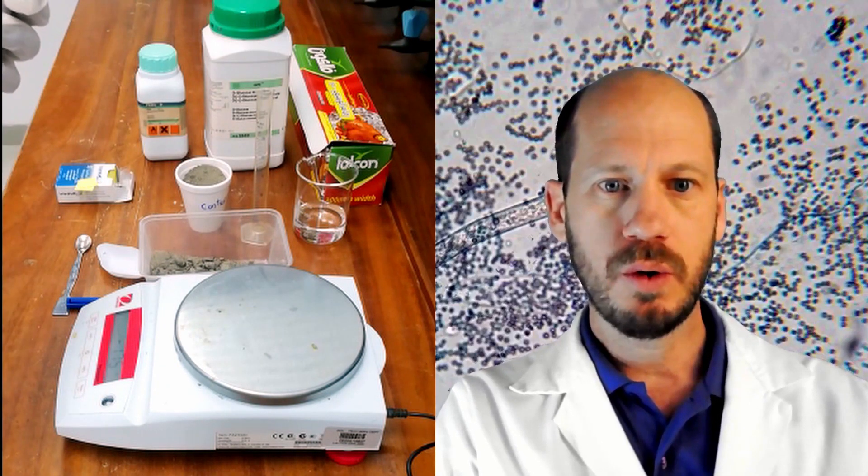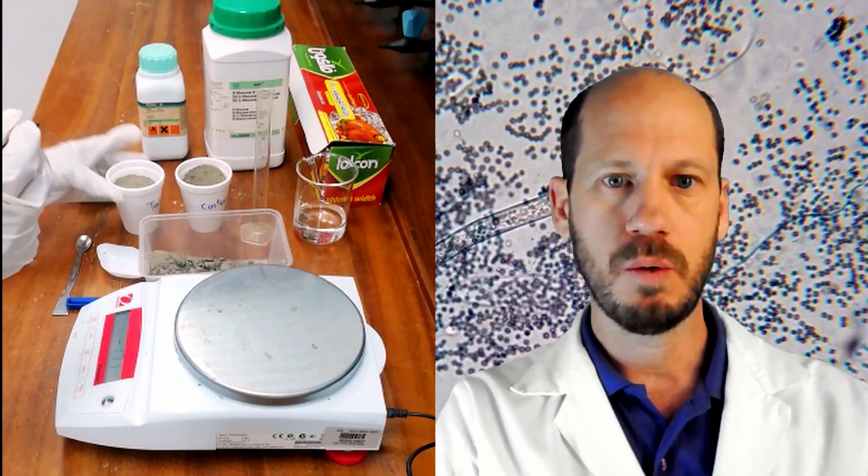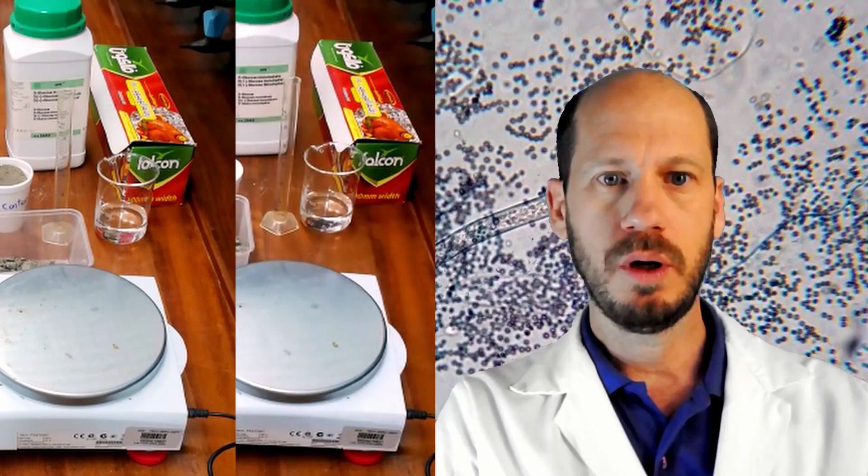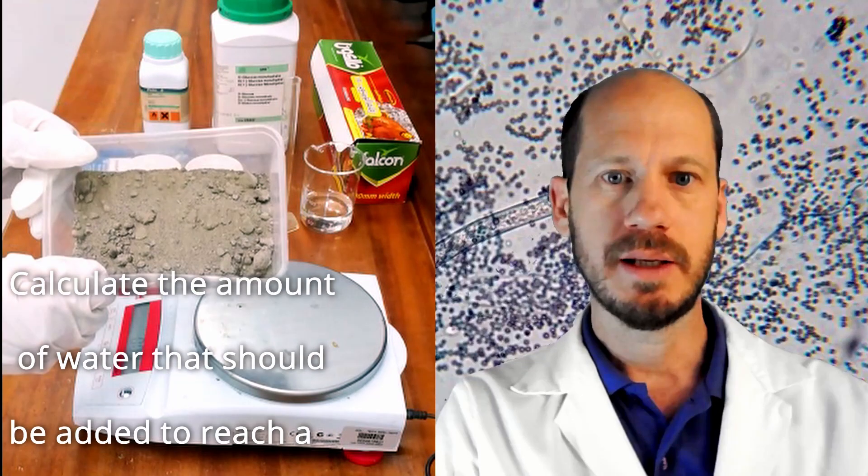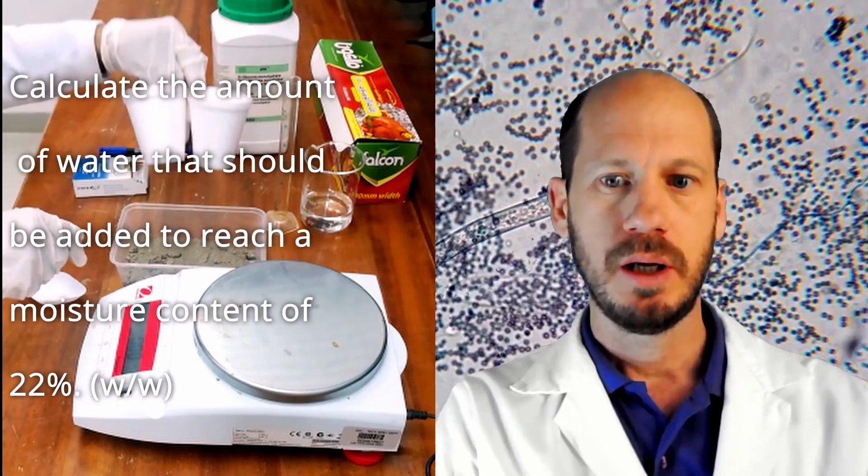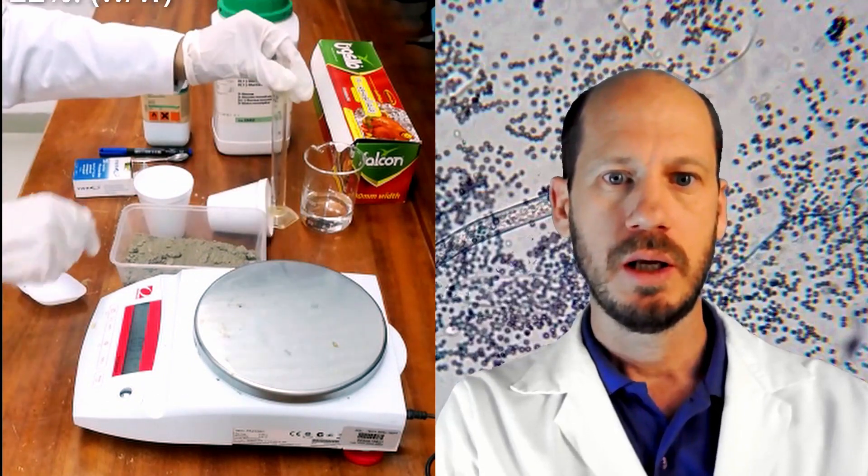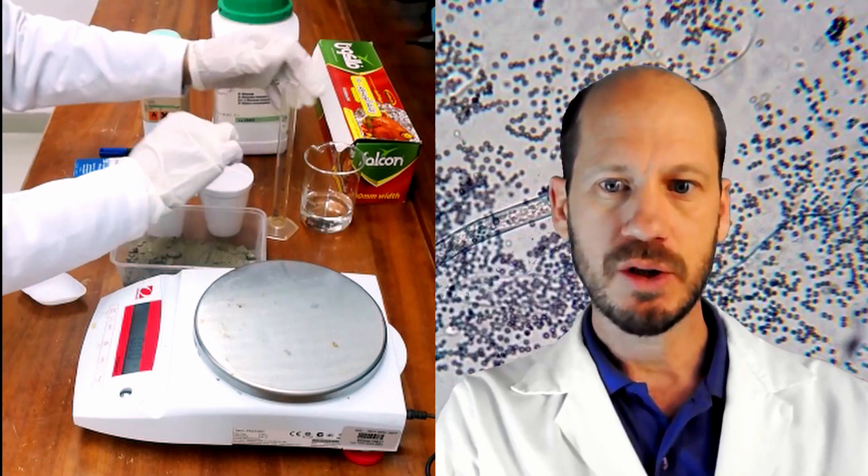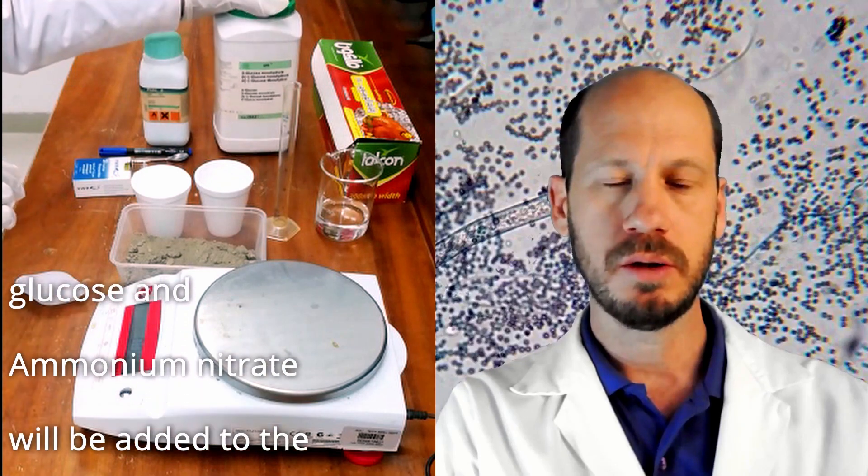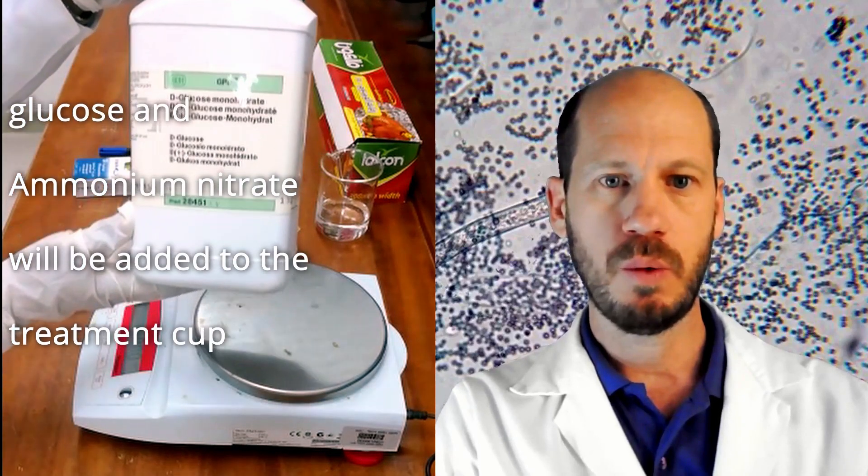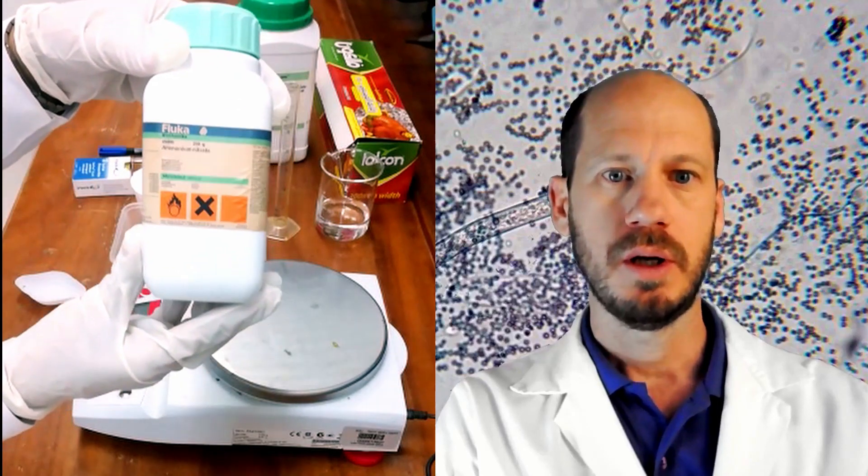What is the control and what is the treatment? The control is just the soil and water. The treatment will contain also glucose and ammonium nitrate as a source of nitrogen and carbon. Glucose is carbon and ammonium nitrate as a source of nitrogen. Both of them will receive water and the treatment will receive the water containing glucose and ammonium nitrate.